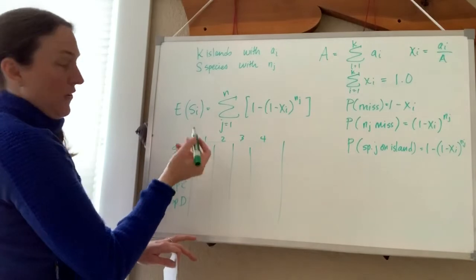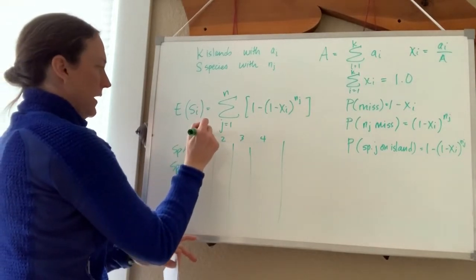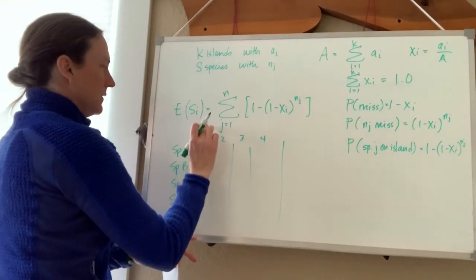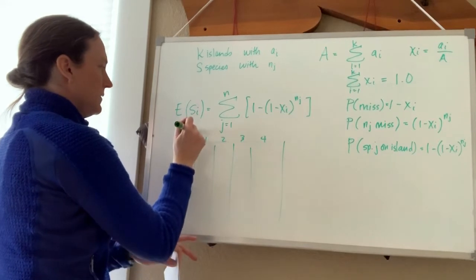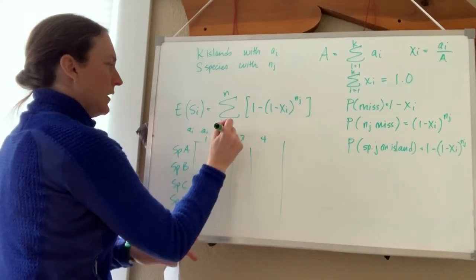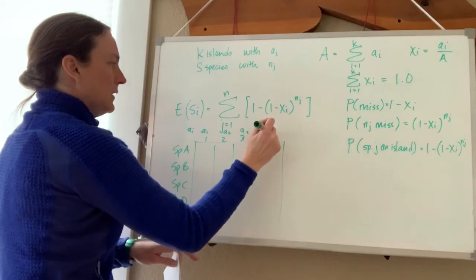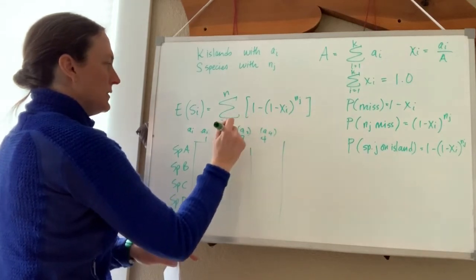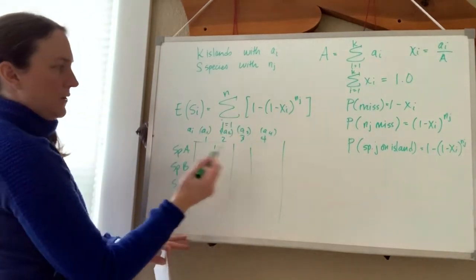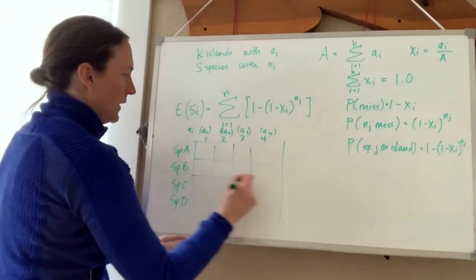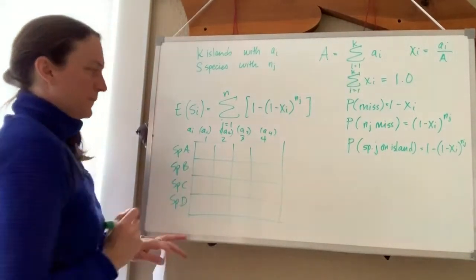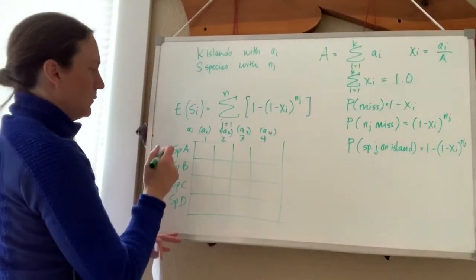And if you knew the areas—A_i—these would be A_1, A_2, A_3, A_4. So if you knew how big these islands were, and then you had a data set showing the number of individuals of each species.